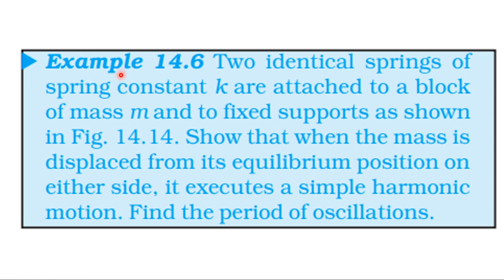From the NCERT textbook, from the topic oscillations, example 14.6. Two identical springs of spring constants k are attached to a block of mass m and two fixed supports as shown in figure 14.14. Show that when the mass is displaced from its equilibrium position on either side, it executes simple harmonic motion. Find the period of the oscillations.